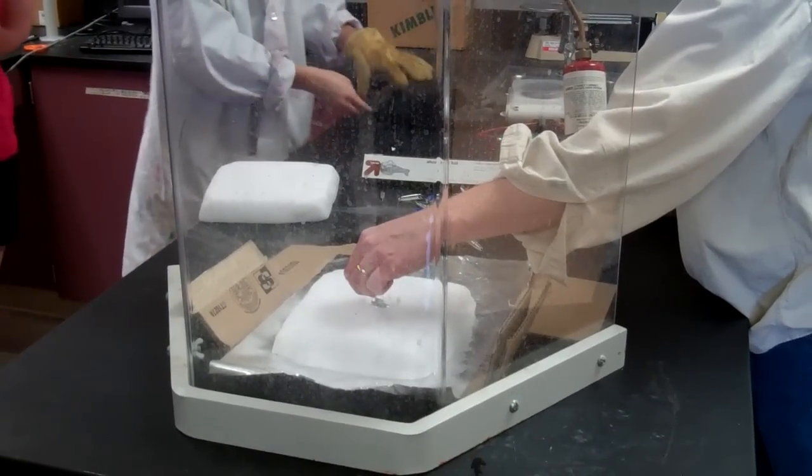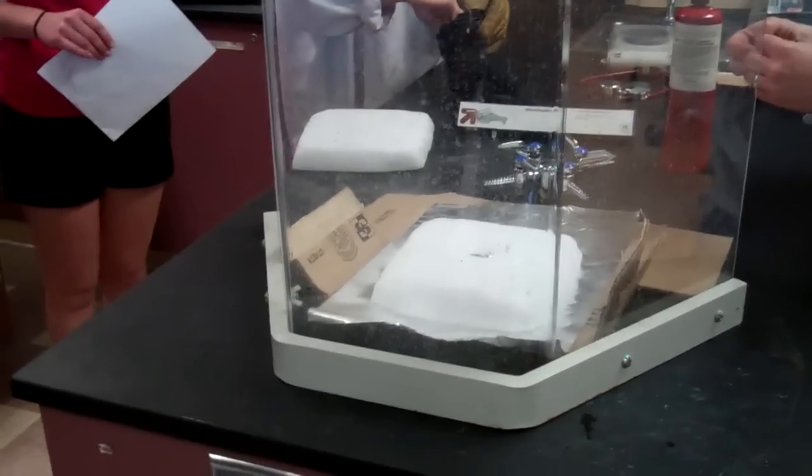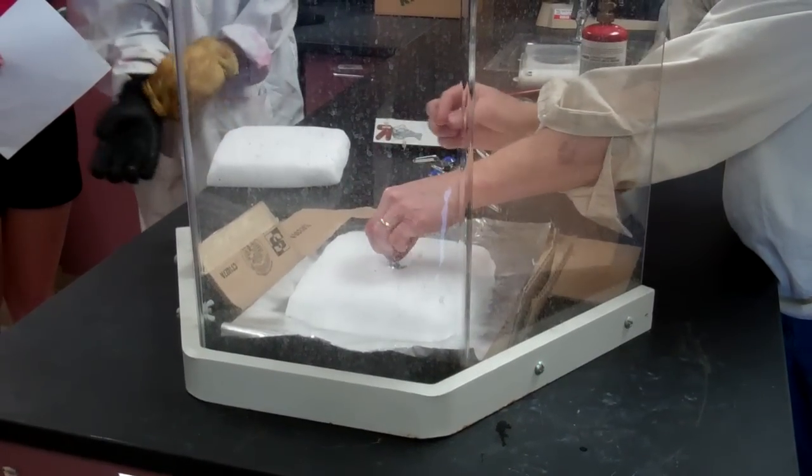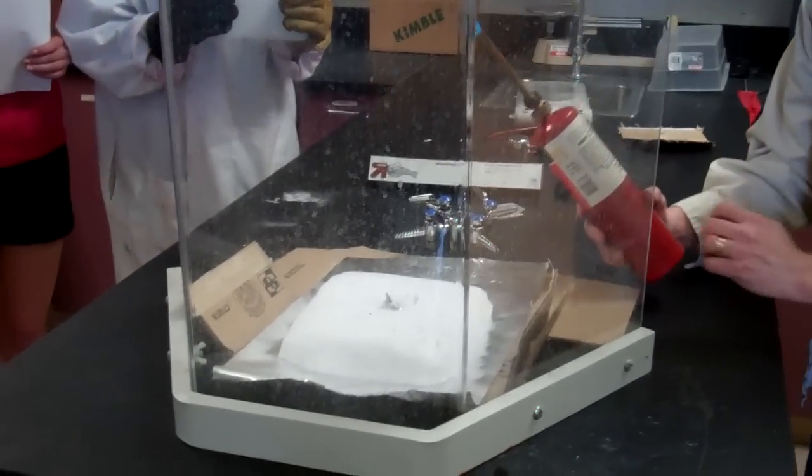So what's going to happen is we're going to burn this, put it on top, and the magnesium will cause a reaction with the carbon dioxide and form magnesium oxide in a shell around elemental carbon. And it'll take a while to light because the oxygen is in there.